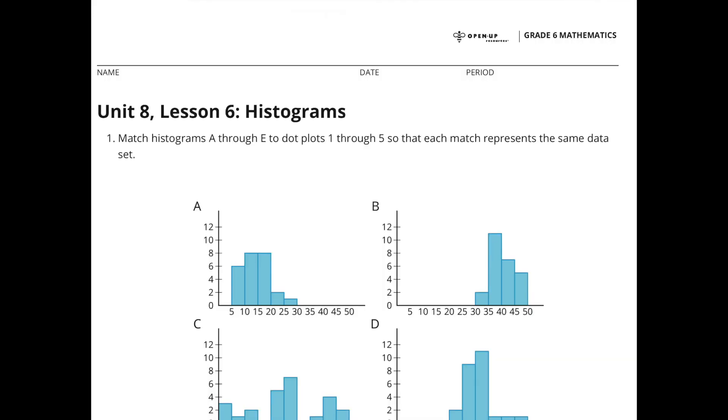Unit 8 Lesson 6 Histograms Number 1. Match histograms A through E to dot plots 1 through 5 so that each match represents the same data set.